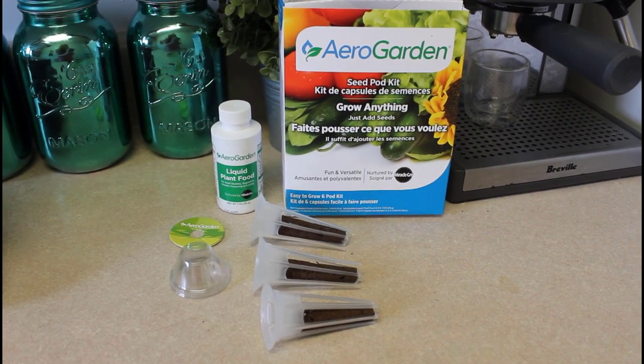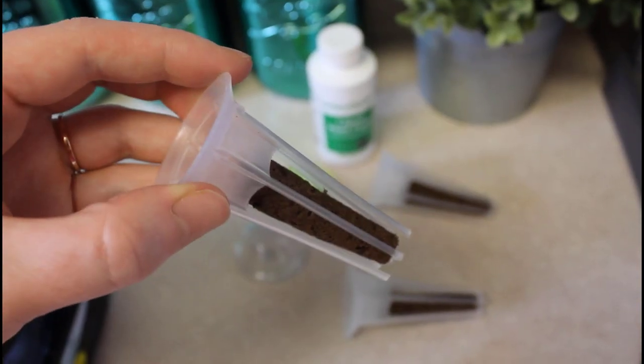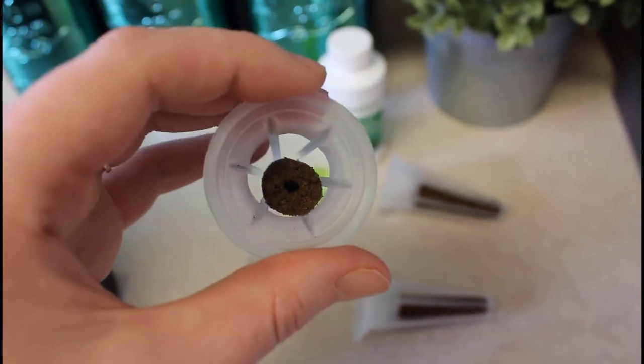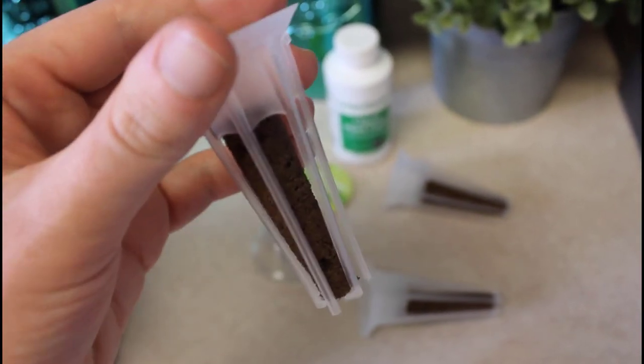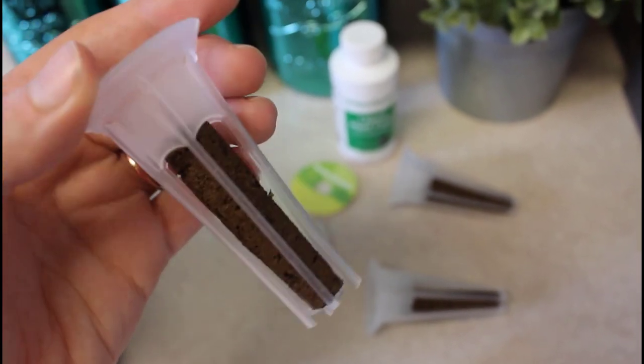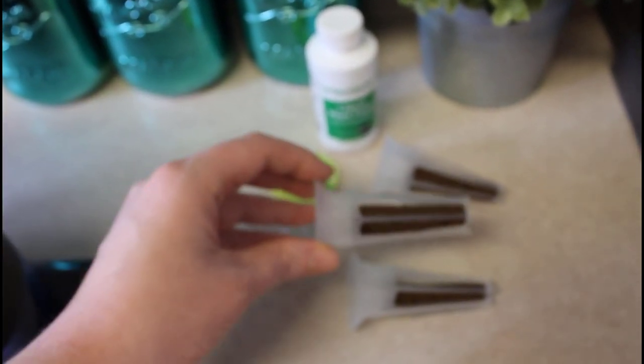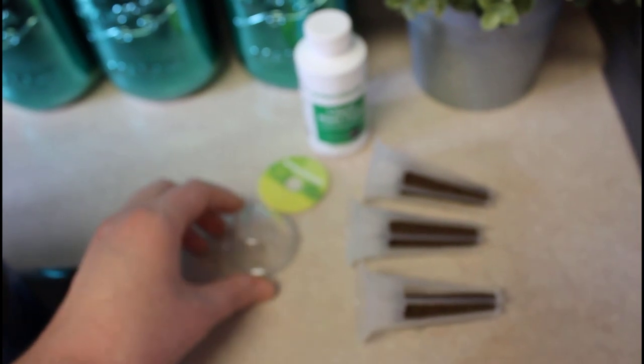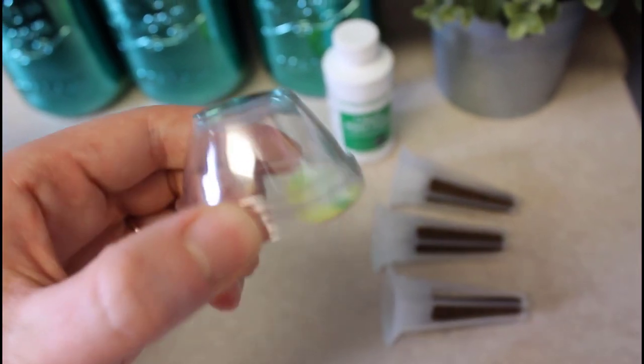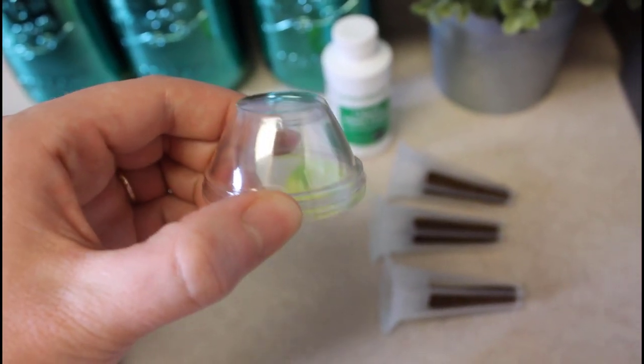Here I have three of the grow baskets with grow sponges already inserted. The package comes with six in total. You also get six of the grow domes which are going to be placed on top of the seeds once you have placed them in.